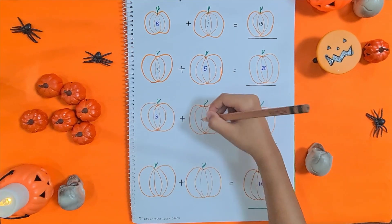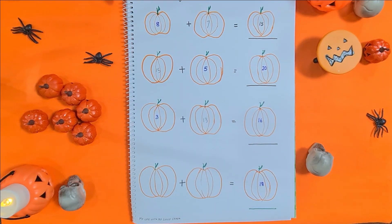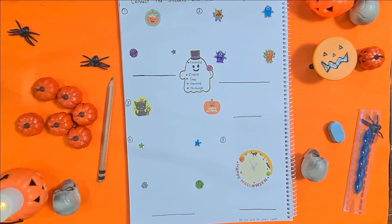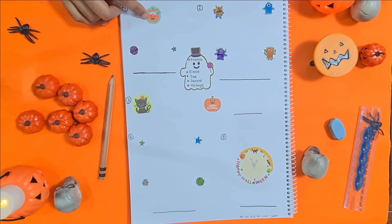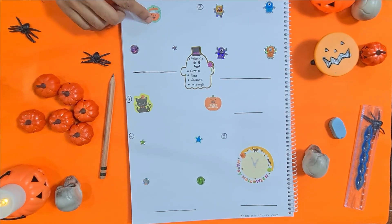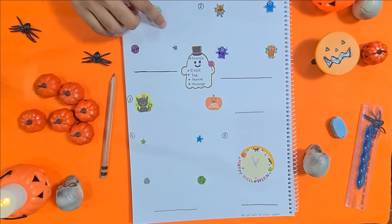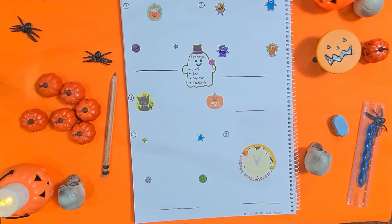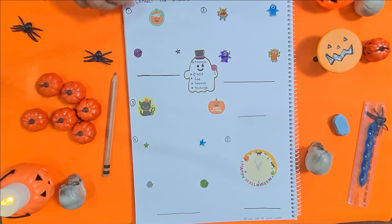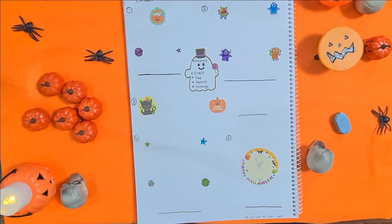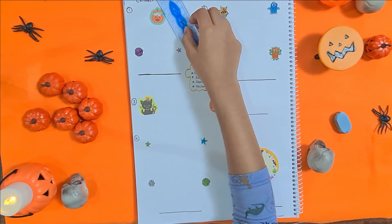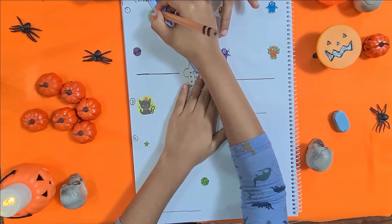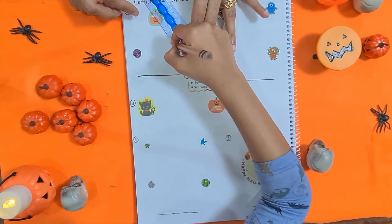The next activity is connect the stickers and find the shape. Here, using a ruler or freehand, the kid just needs to connect the stickers and find what shape it is and write the names here. Are you ready? Yes. You can use the ruler.